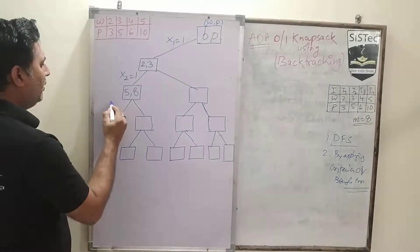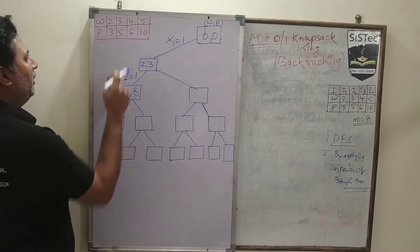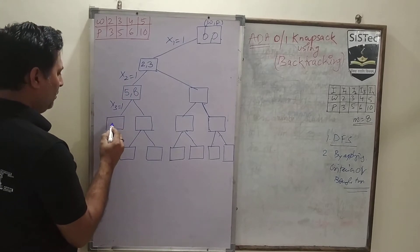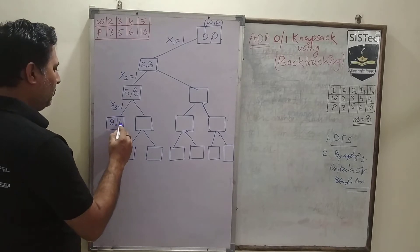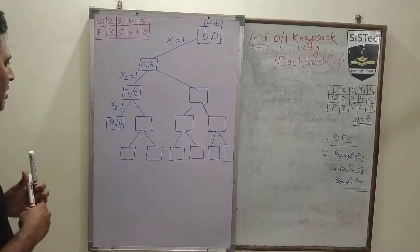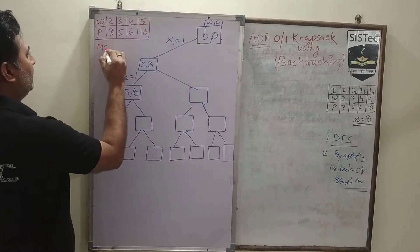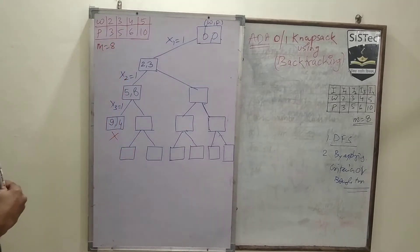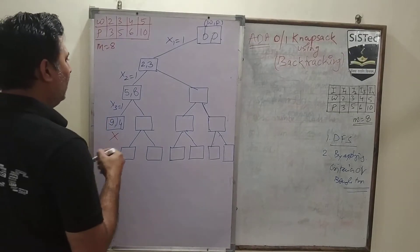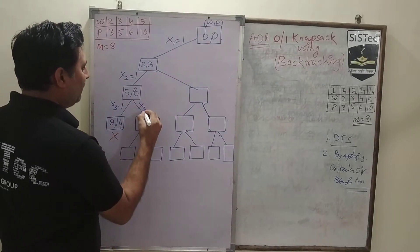Now we will consider the third weight. After considering weights 1 and 2, we will consider the third weight. The weight value is 4. So now the total weight becomes 9 and the total profit becomes 14. The capacity is 8, so we exceed the capacity. We will backtrack to the previous node — after taking the 2nd weight, we can't take the 3rd one.